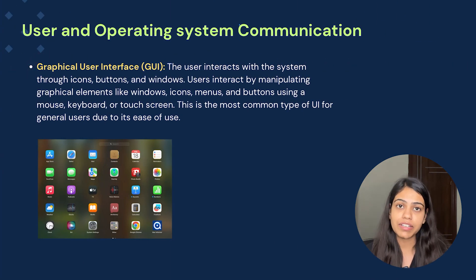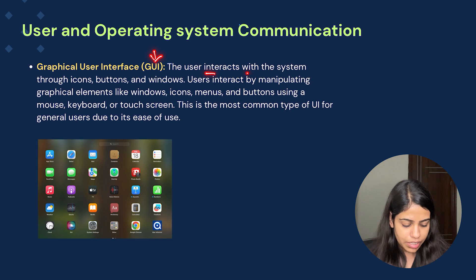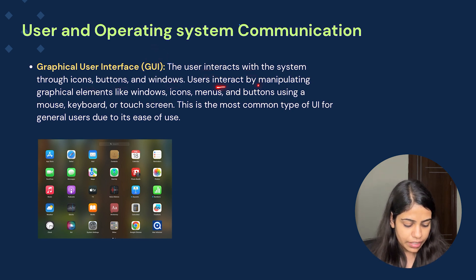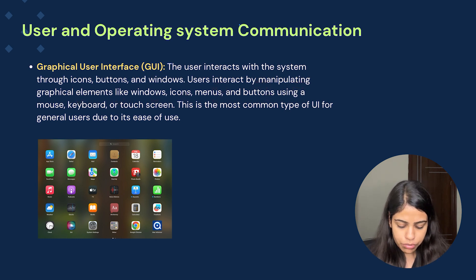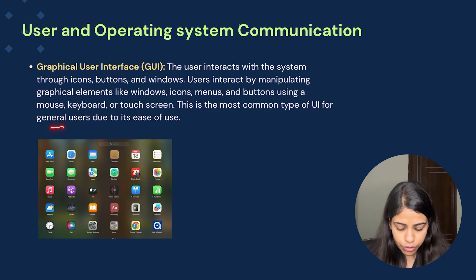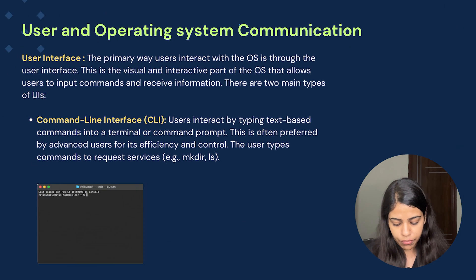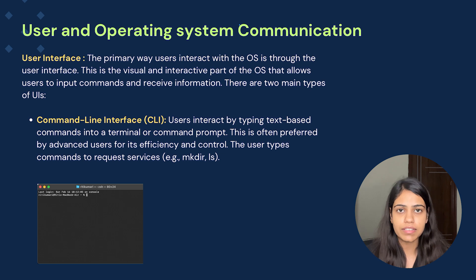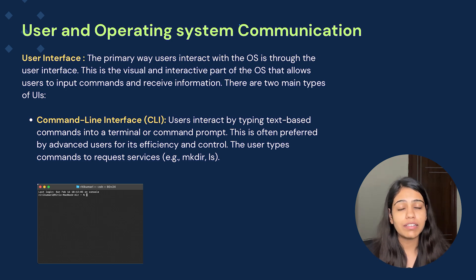The second way is graphical user interface, that is GUI. The user interacts with the system through icons, buttons, and windows — manipulating graphical elements using a mouse, keyboard, or touchscreen. This is the most common type of UI for general users due to its ease of use. In CLI, you need to remember commands for everything — going to a folder, accessing a file, opening a text editor — and learning all those commands is a tedious task.